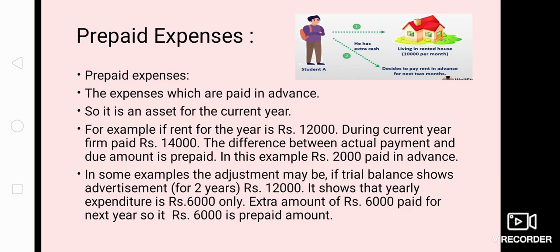First we will talk about prepaid expenses. You can see a picture of a student living in a rented house. His rent for the month is rupees 10,000, and he has some extra cash, so he decides to pay the next two months' rent in advance. That advance amount is prepaid — his expenses per month are 10,000, and for two months extra he is paying 20,000. That amount paid in advance is called prepaid.